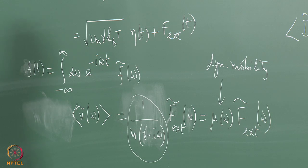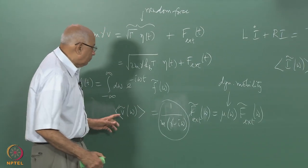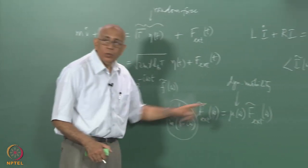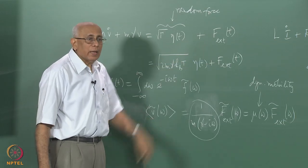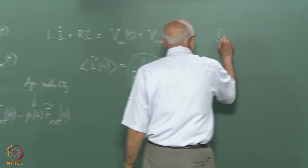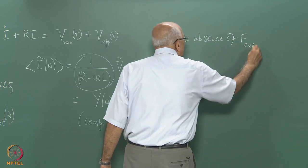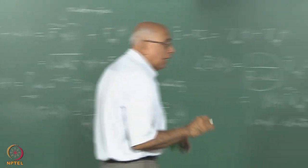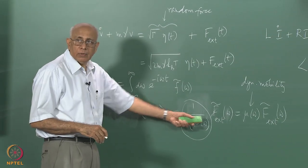The dynamic mobility is a complex number in general. What is interesting is that we found a relation between the power spectrum of the input and the power spectrum of the output. We discovered that the modulus squared of μ(ω) gives us the power spectrum in the absence of the external force. In the absence of f_external(t), when you only have the random internal force, the average value of velocity is zero, because the fluctuating force has zero average.